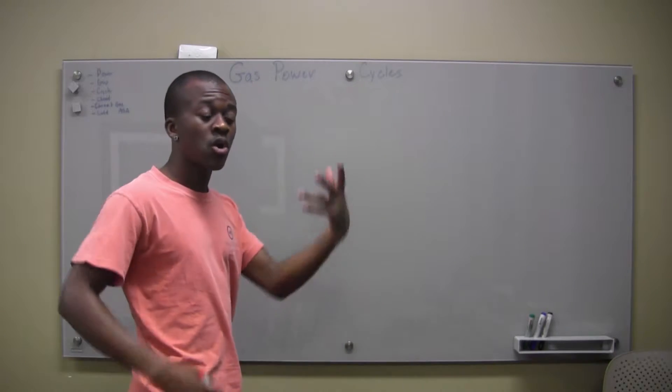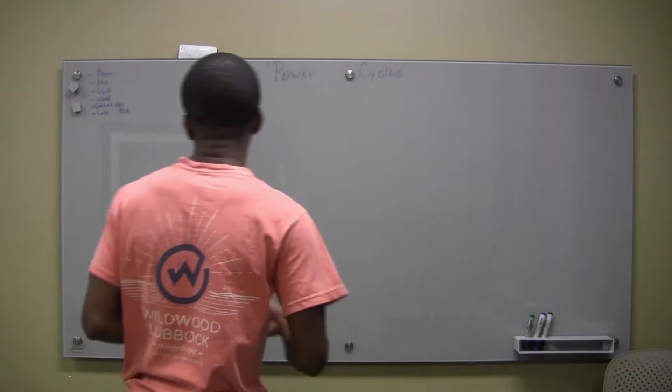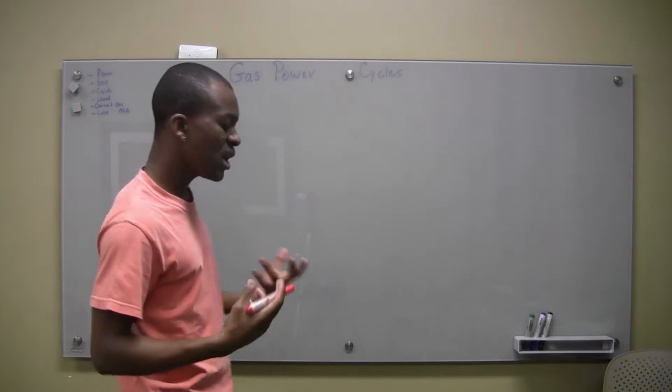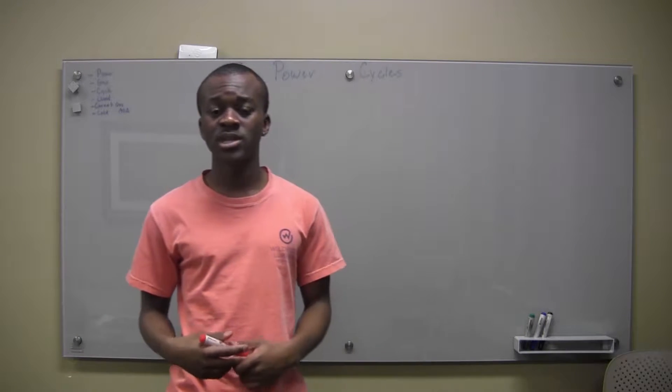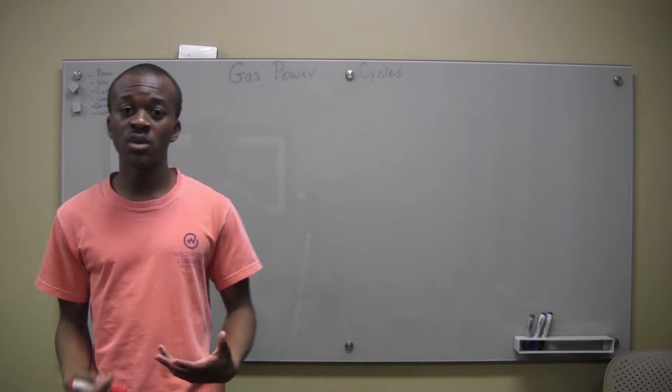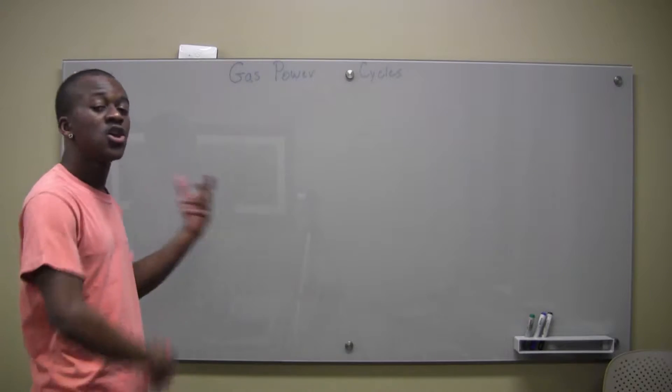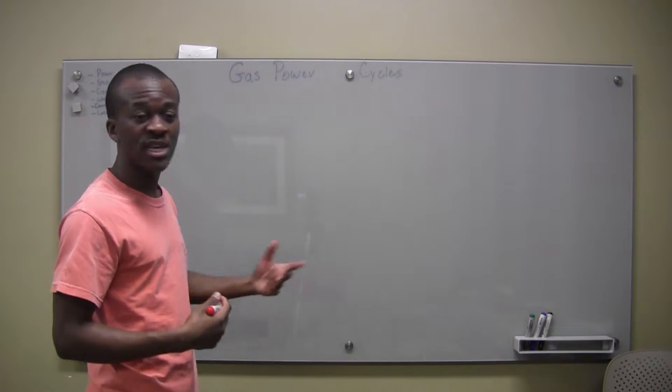And we know that a cycle is just we're operating where our start point is the same as the end point. It's important to note that with these gas power cycles, we're dealing with closed systems. So our Q minus W equals delta U comes into play. You'll see more as we do examples, but just keep that in mind.